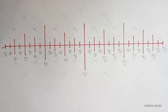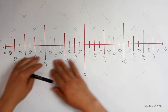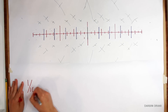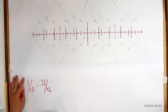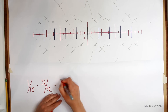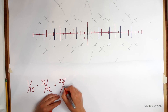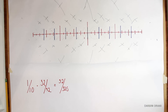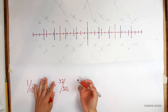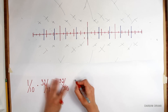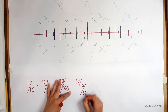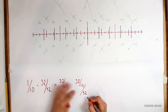So we want to know how many 32nds each tenth is. We simply multiply one tenth times 32 over 32, which equals 32 over 320. Now, we want to stay in the 32nds scale, so we need to divide both the numerator and the denominator by 10, which gives us 32 over 10, all over 32.